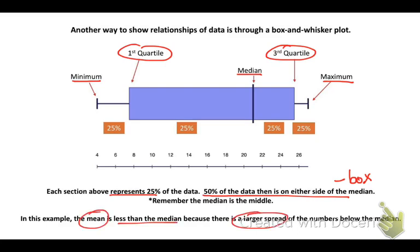In this example, we can right away know that the mean would be less than the median because see how there is such a larger spread of numbers below the median. So that means more numbers below the median would pull our mean, our average, so that it would be lower than the median.